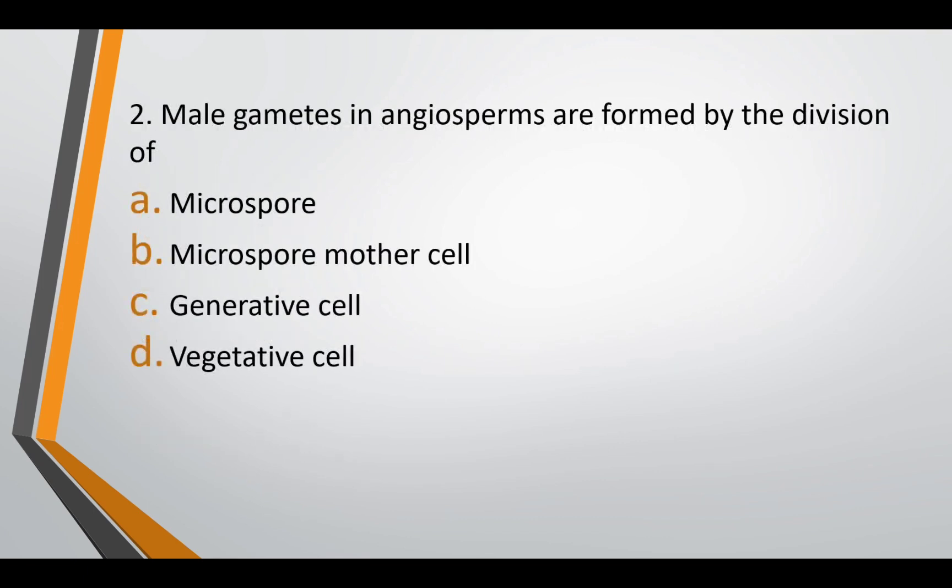Question two: male gametes in angiosperms are formed by division of — option A: microspore, option B: microspore mother cell, option C: generative cell, or option D: vegetative cell. The correct answer is option C — generative cell.